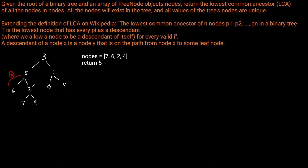Then we go into the right subtree of 5. Is 2 in nodes? Yes — so we return 2. We don't even have to go any further. Since all nodes are guaranteed to exist in the tree, as soon as we find a node in our list we return it to its parent. Node 5 receives 6 and 2 — two non-null values from left and right — so we return 5. Going into 3's right subtree: is 1 in nodes? No. Is 0 in nodes? No. Its children don't exist, so we return none.